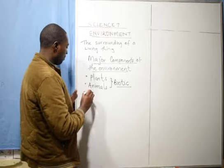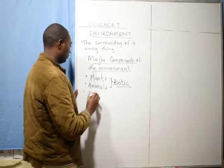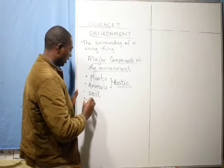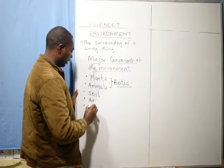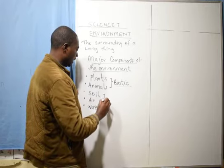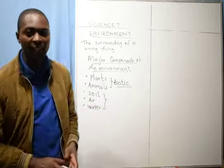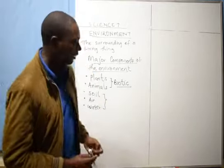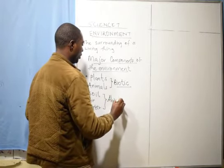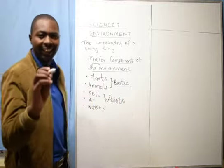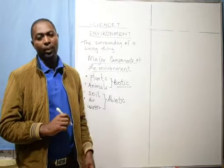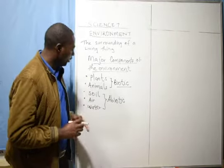We also have other major components like soil. Soil is not living. We have air, and we have water. If I look at these three, they are very important to us, but they are not living. Therefore, we say they are abiotic — meaning non-living components.